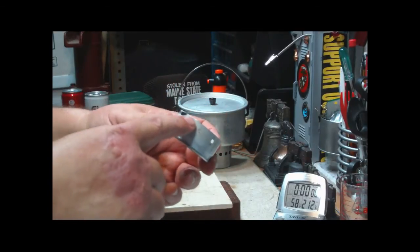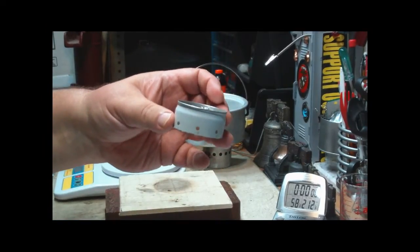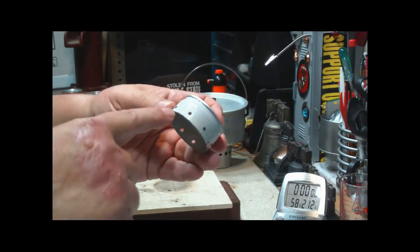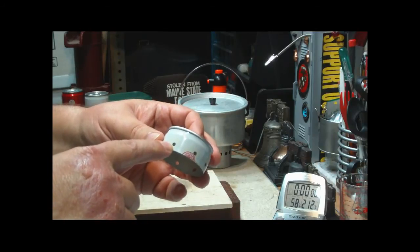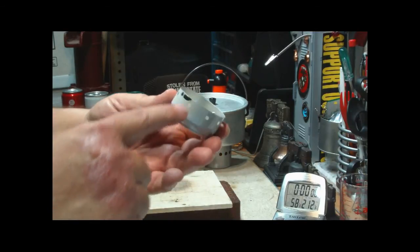So what I did here was I cut the top inch of the can off. I punched eight eighth inch holes in here, one quarter of an inch down from the top.